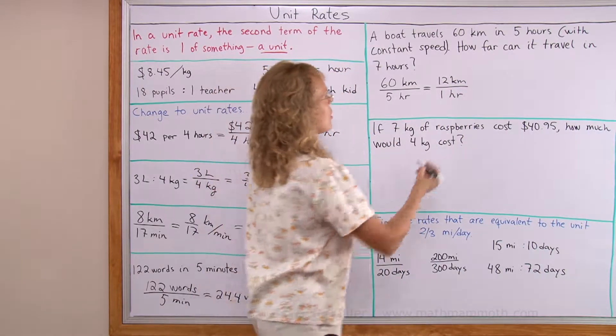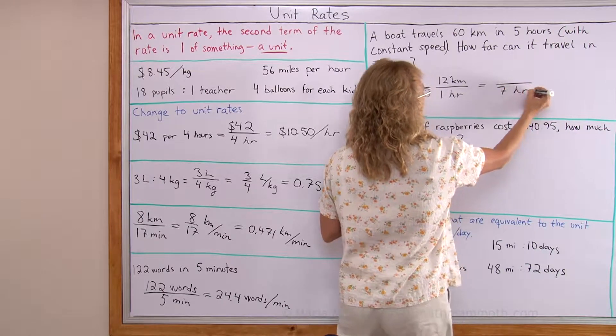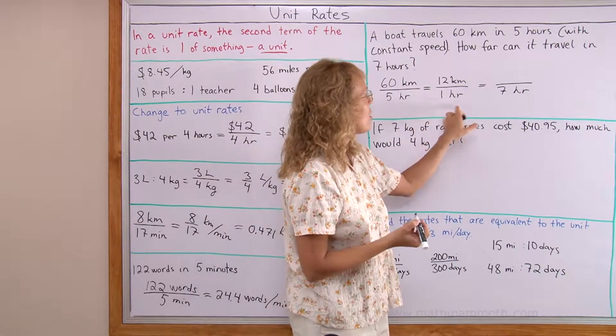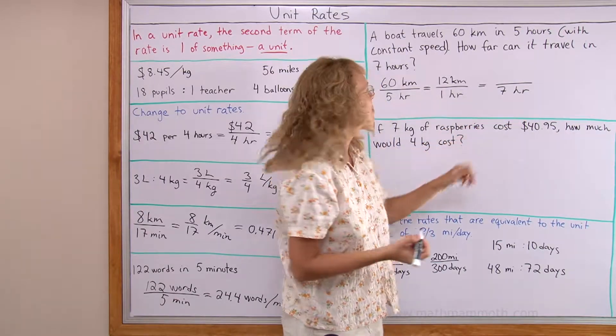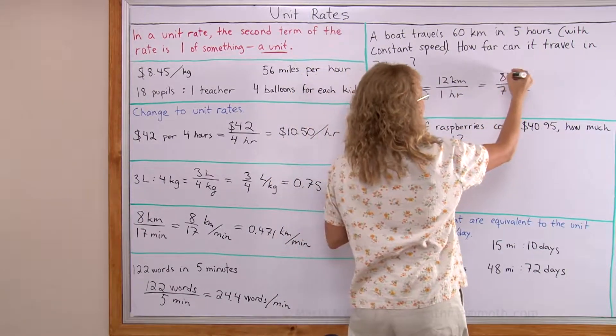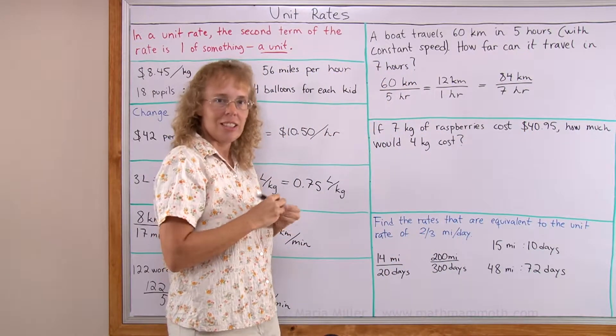And now for 7 hours I will write another equivalent rate. From 1 hour to 7 hours I will multiply it times 7, right? And 7 times 12 is 84 km. So the answer is 84 km in 7 hours.